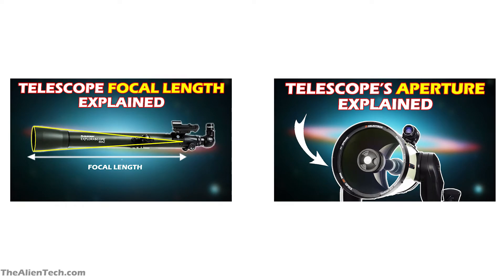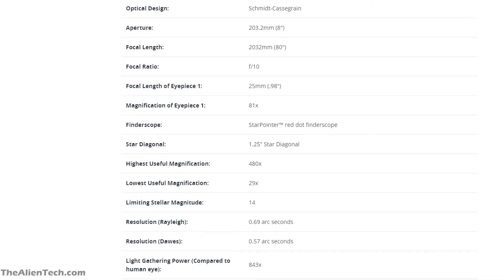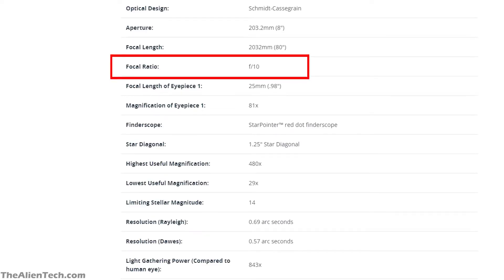In the last two videos, we explained to you about a telescope's aperture and focal length. One more and third important parameter of a telescope is its focal ratio. Same as aperture and focal length, the focal ratio is also always mentioned in the specifications of a telescope.